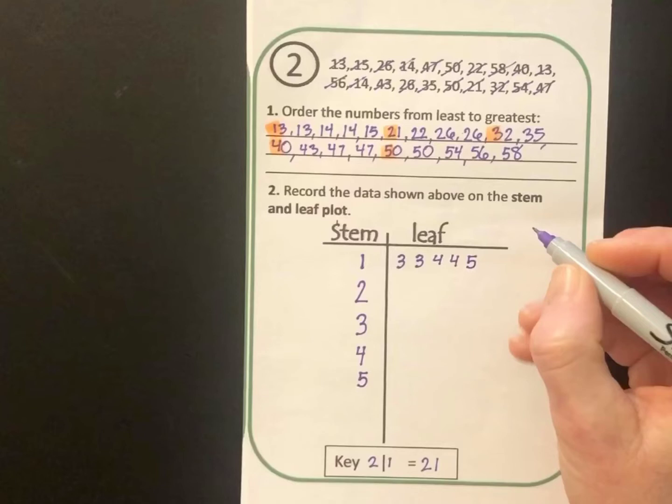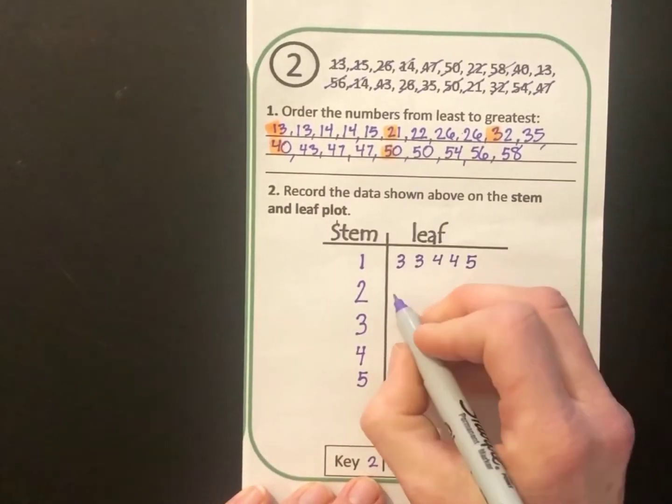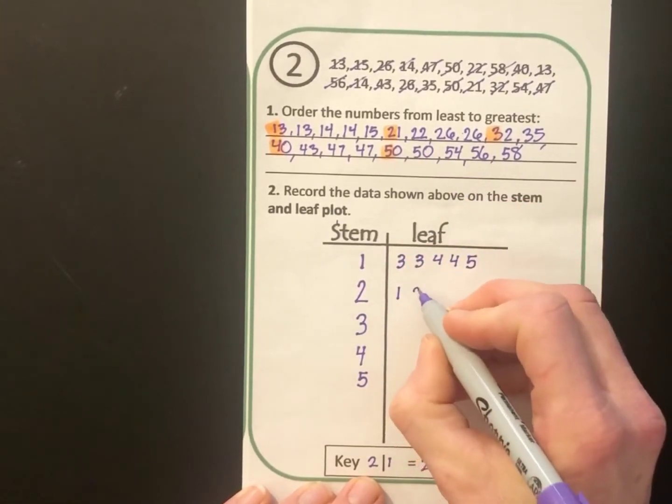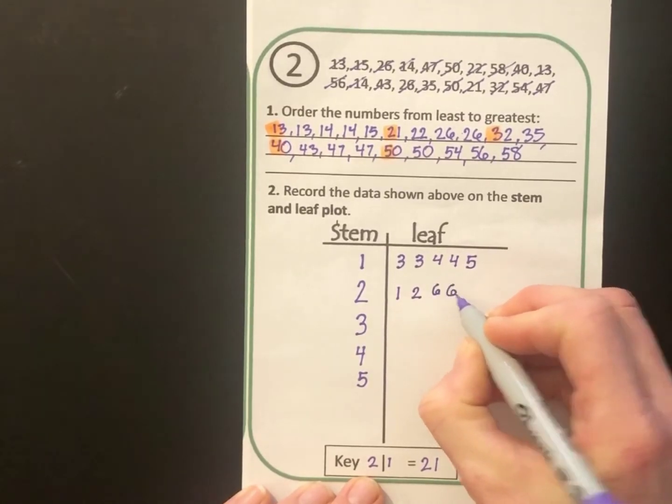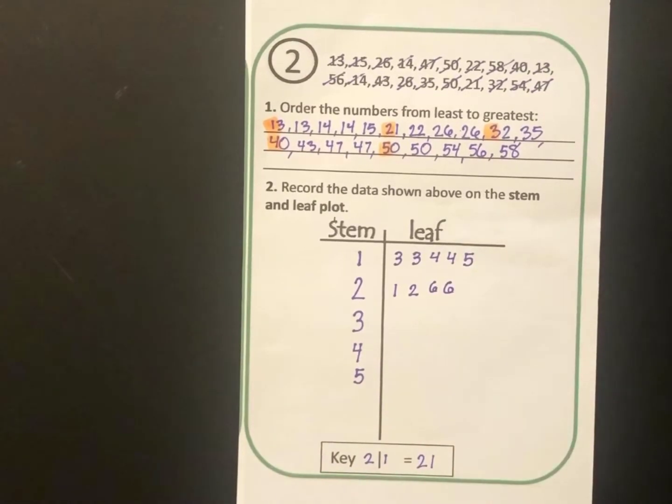Let's go on to do the second row together and then the next three rows I'll have you do on your own. The second row starts with the stem of 2, so I'll look at all my 20s: 21, 22, 26, and 26. So I'll write that as a 1 for 21, a 2 for 22, and two 6s for the 26s. When the video lesson is done, I want you to go ahead and go back and finish number 2. You'll do the rows that start with the 3, the 4, and the 5.